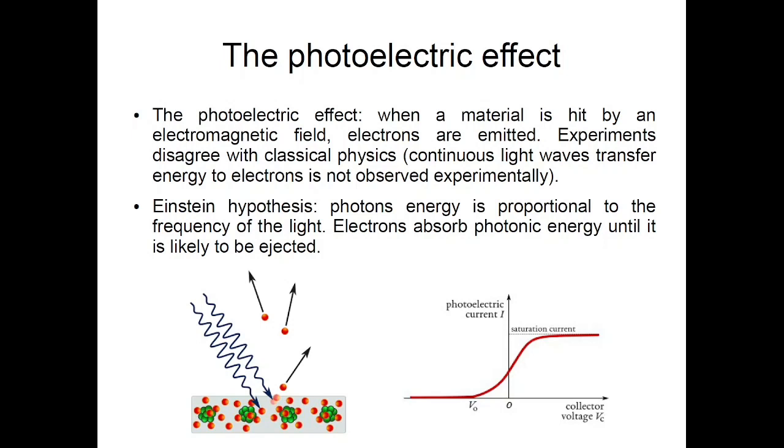Experimentally speaking what we observe is very different. So Einstein introduced at that time the following hypothesis, which is that the energy of photons is proportional to the frequency of light, and electrons absorb photonic energy until it is likely to be ejected, but this energy is absorbed practically in quanta once again.